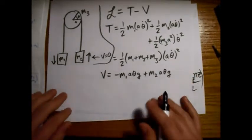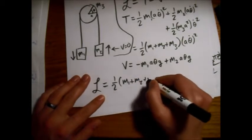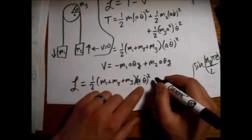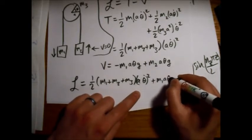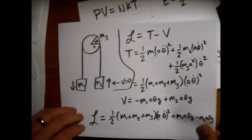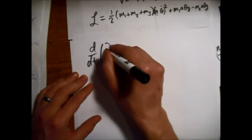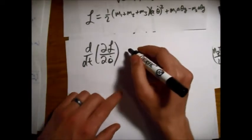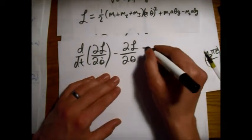So our Lagrangian is one-half m1 plus m2 plus m3 a theta dot squared, the quantity squared. And then minus this V, which is plus m1 a theta g minus m2 a theta g. So there's our Lagrangian. So we'll write out our Euler-Lagrange equation, which is the time derivative of the partial derivative of the Lagrangian with respect to theta dot. Theta is our one generalized coordinate for the system. Minus the partial derivative of the Lagrangian with respect to theta equals zero.